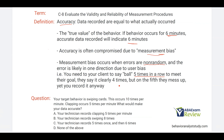Measurement bias happens all the time in self-management. Think about exercising or running. If your goal is to run a mile in six minutes and you get six minutes and five seconds, the temptation to mark down six minutes is very high. That's measurement bias — non-random errors due to user bias.